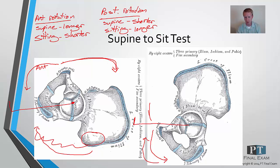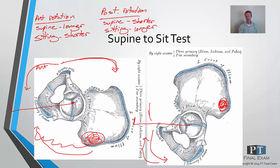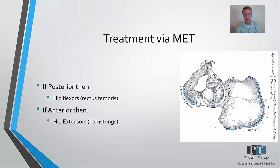The key point is that the axis of rotation is all the way back at the SI joint, meaning the acetabulum is moving forward and around, or down and back, in each of those positions. So what do you do to treat this?